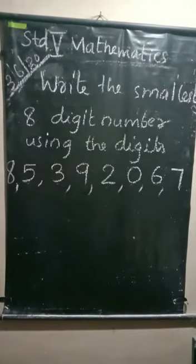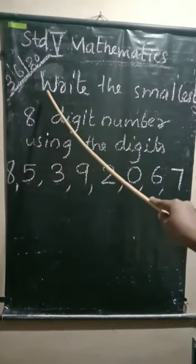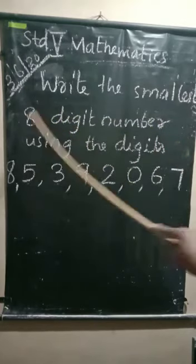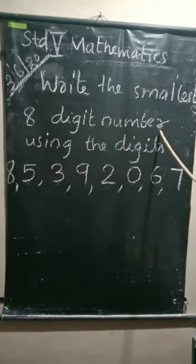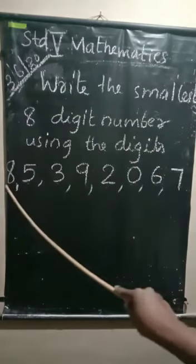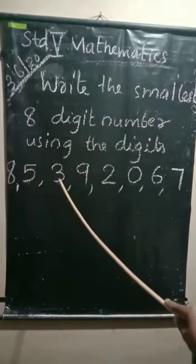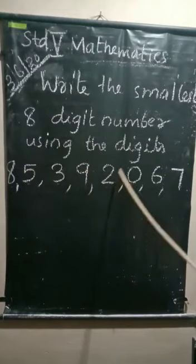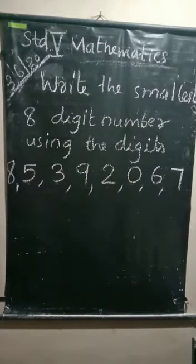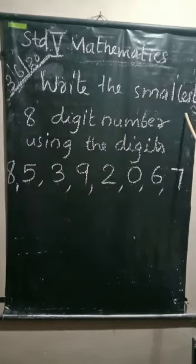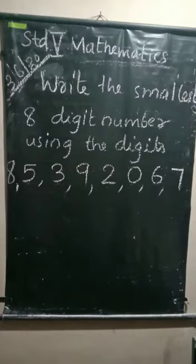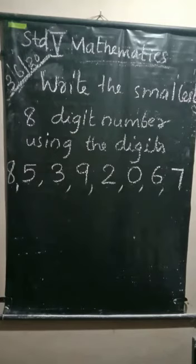Next, we have another question: write the smallest eight-digit number using the digits 8, 5, 5, 3, 9, 2, 0, 6, and 7. For getting the smallest number, we should write the ascending order of the given digits.